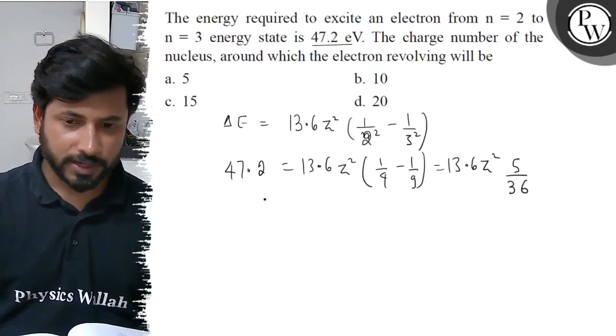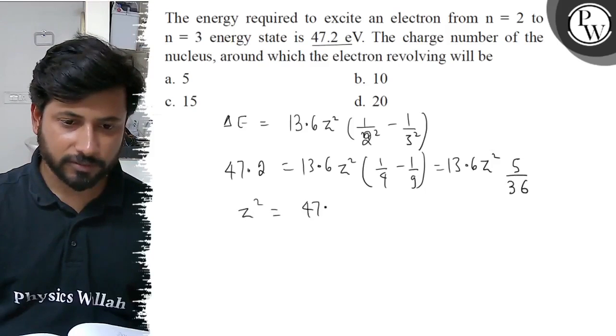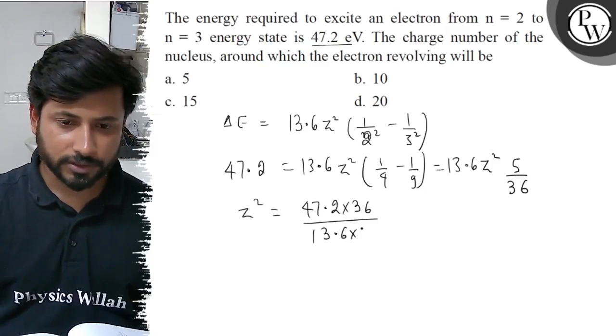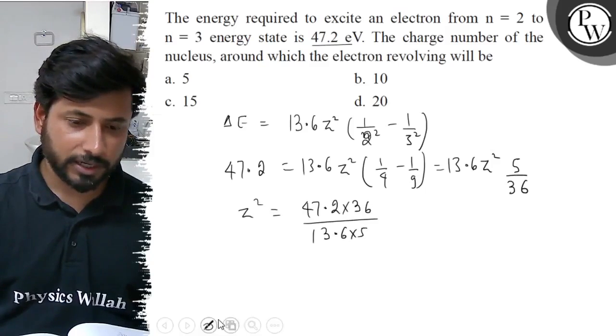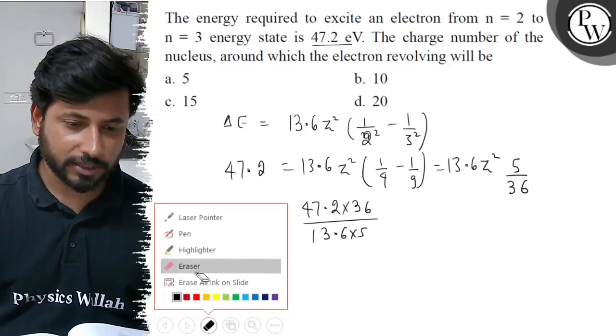So here we can take out Z. We can solve Z squared equals 47.2 times 36 upon 13.6 times 5. So Z would be the square root of this quantity.